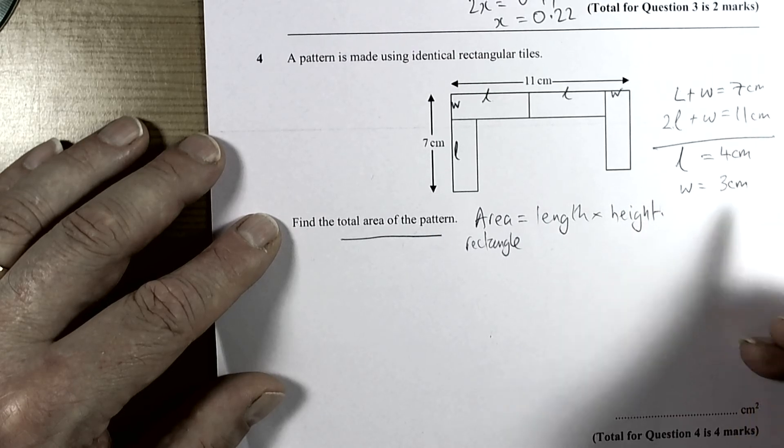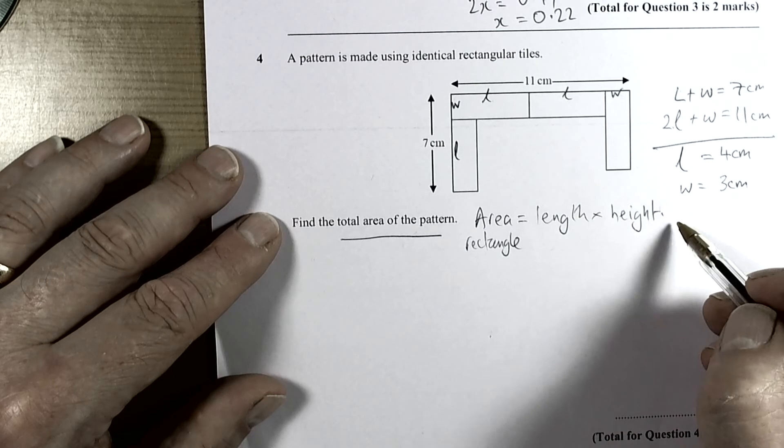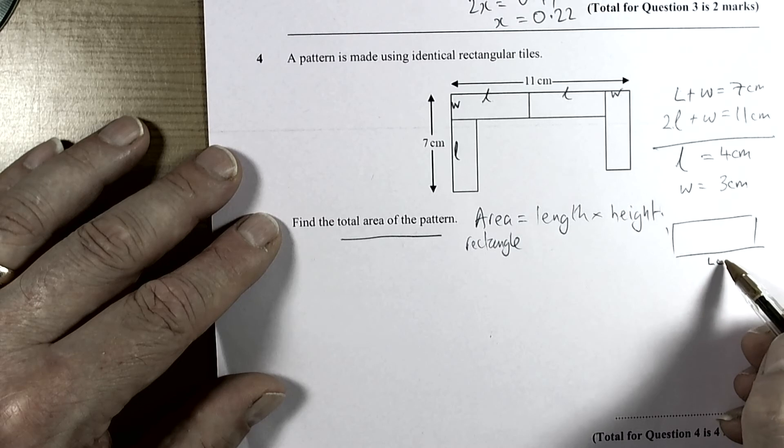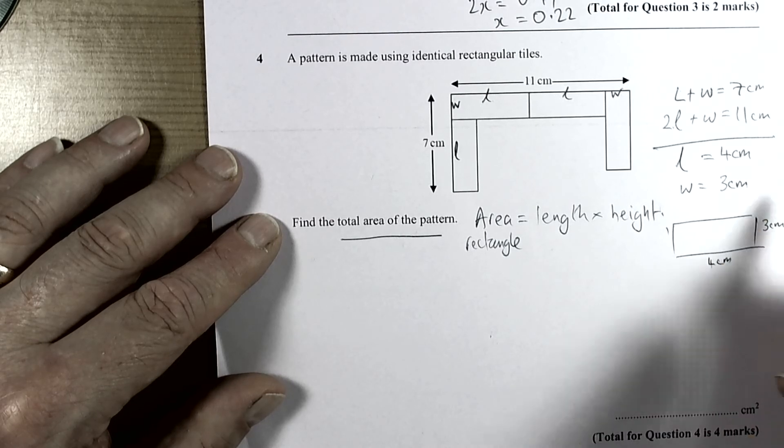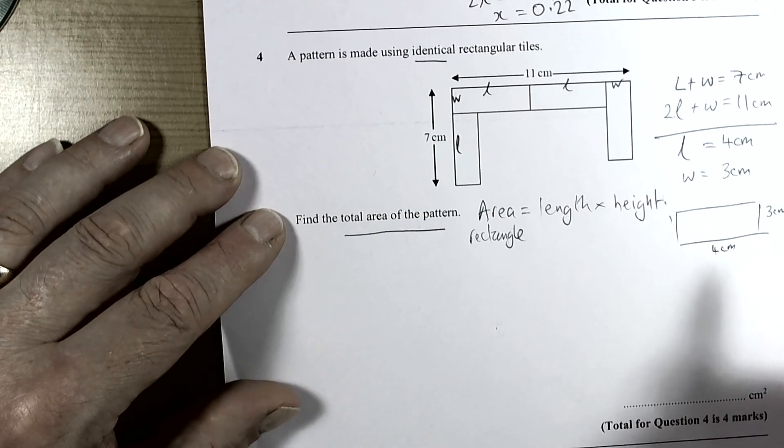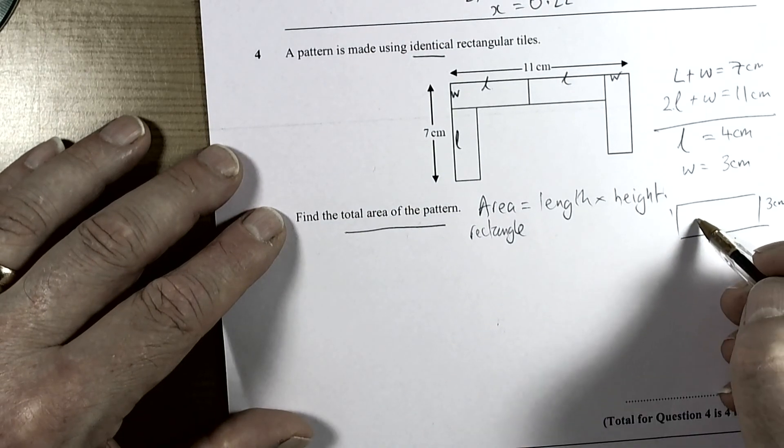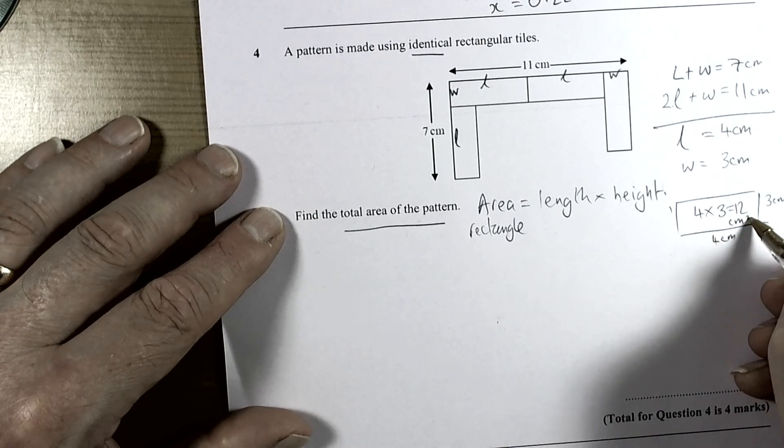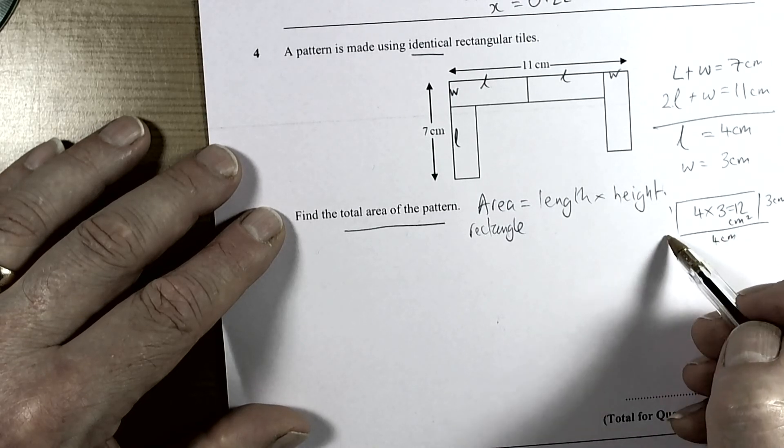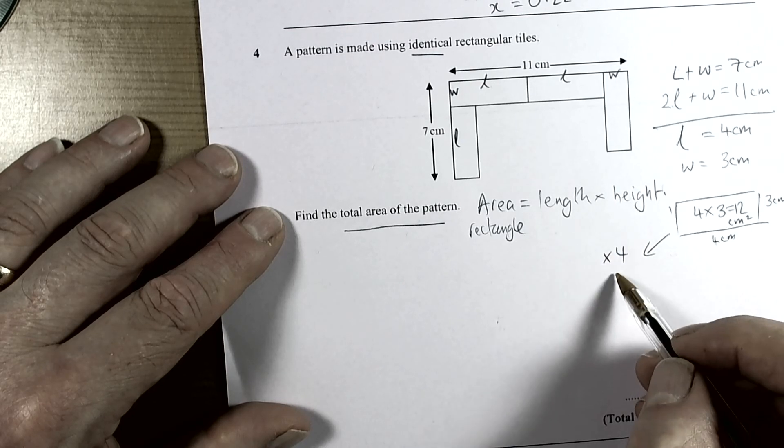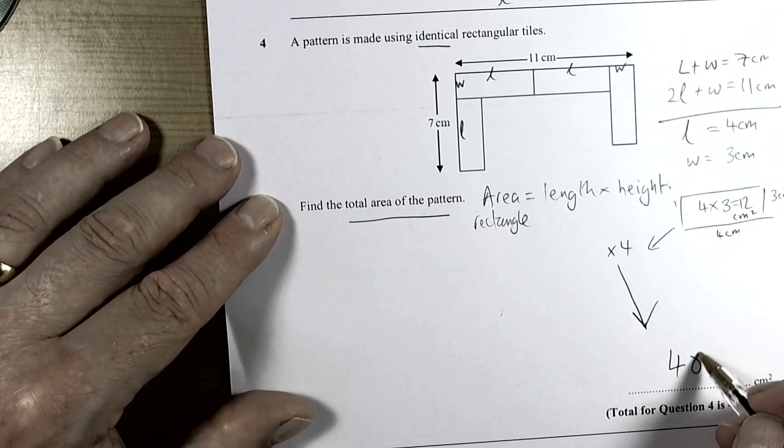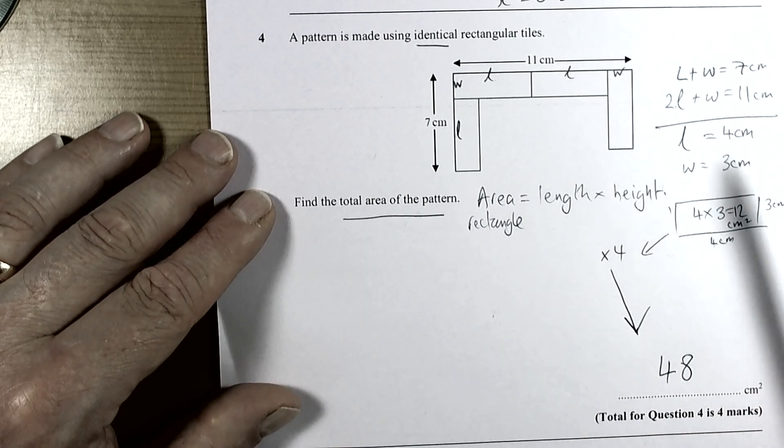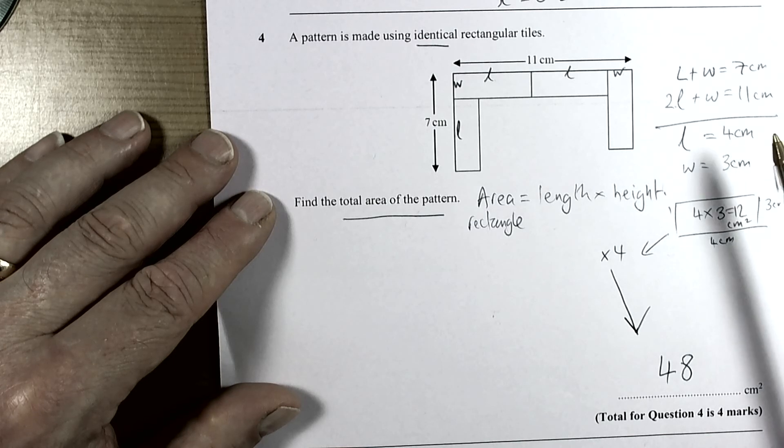We now know that one rectangle has a length of 4 centimeters and a height of 3 centimeters, because it told us they're all identical. That's our clue that we work out the area of this by doing 4 times 3, which is 12 square centimeters. Because there's four of them, we times that by 4 to get the answer of 48. Okay, so that's the first four questions. One more question to come through hopefully.